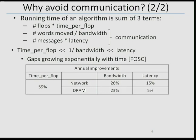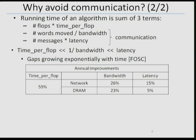This is very old NRC data from 2004, but you can see they're all growing apart rather rapidly. So even if your algorithm is not communication-bound today, it might be next year. Our goal is to reorganize all algorithms to avoid communication — to do provably as little data movement as possible between all different levels of the memory hierarchy, between processors over a network. There are very large speed-ups possible, and since moving data also costs more energy, you can think of this as also minimizing energy.